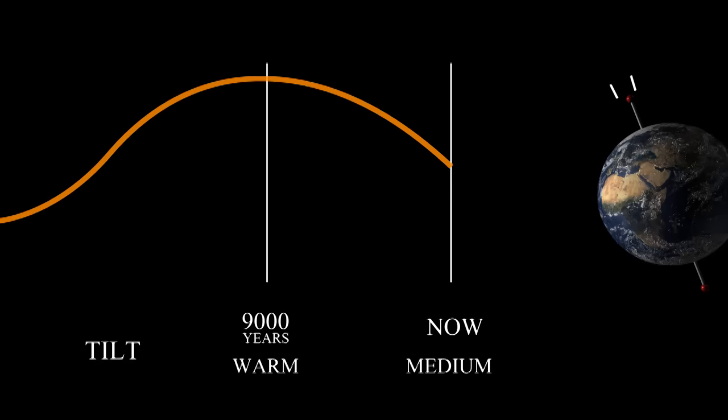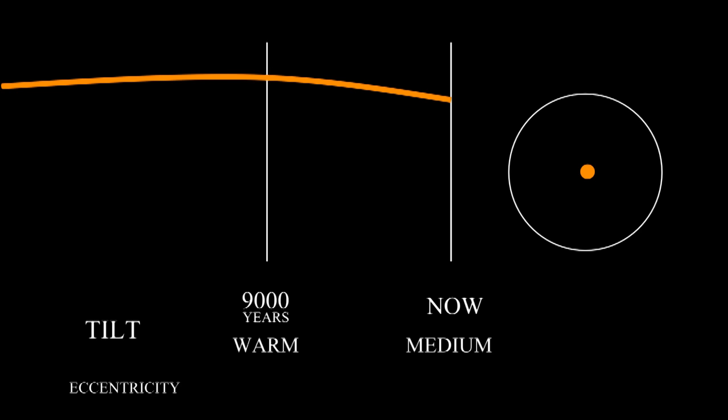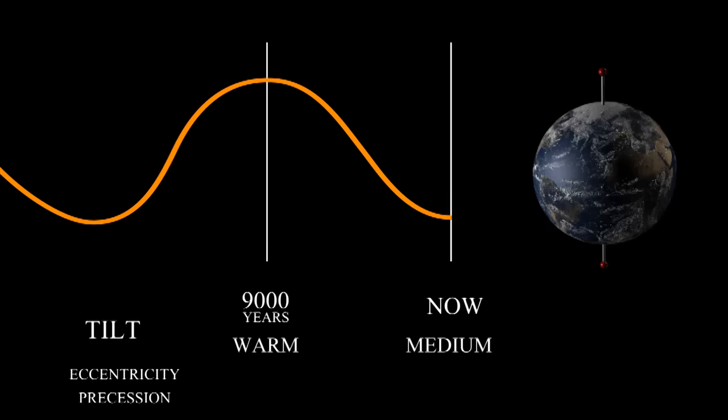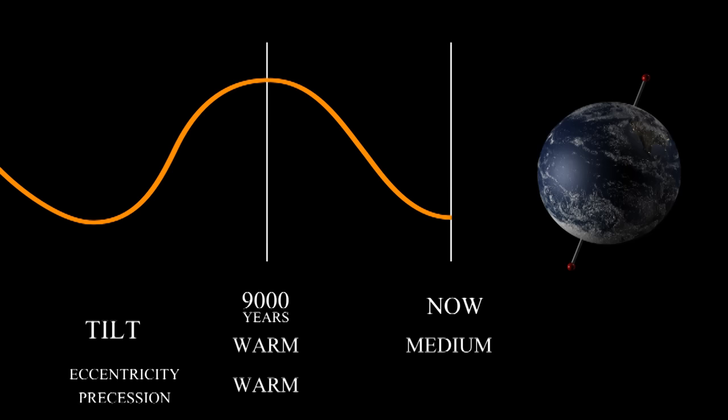Next, eccentricity. Currently, our eccentricity is low, meaning the Earth's orbit is almost a circle. We combine the eccentricity with the precession of the axis to figure out how far away the Sun is during the northern summers. 9,000 years ago, the Earth was close to the Sun in the summer, but now it's far away. So we had been in a warm period, and now we're in a cold period.